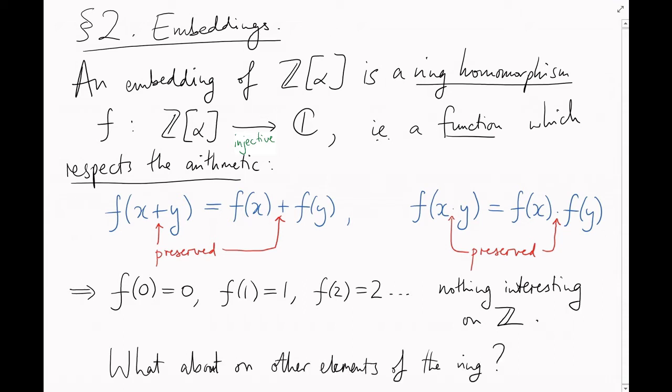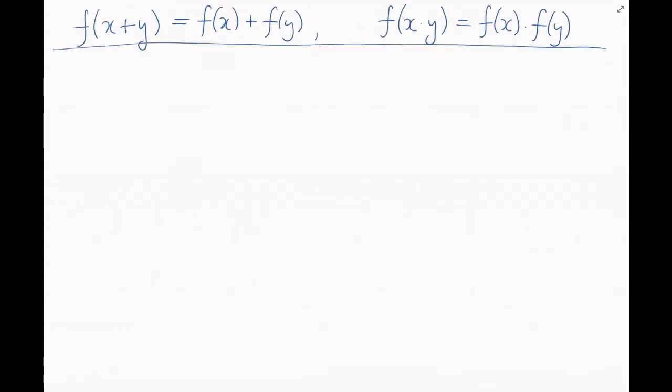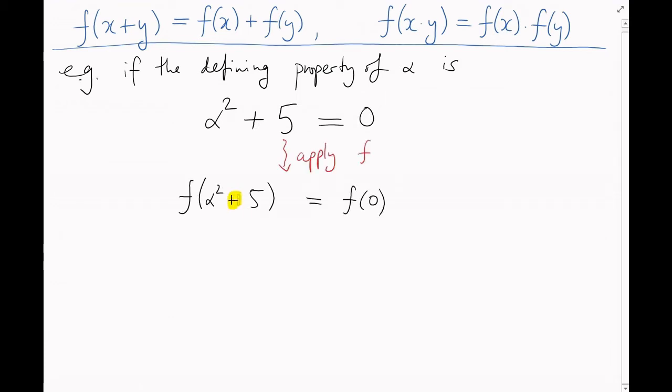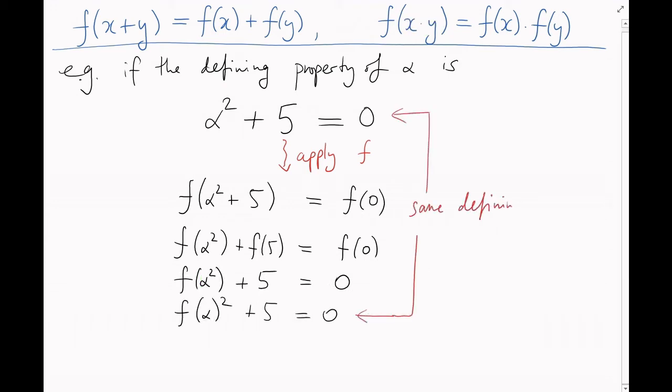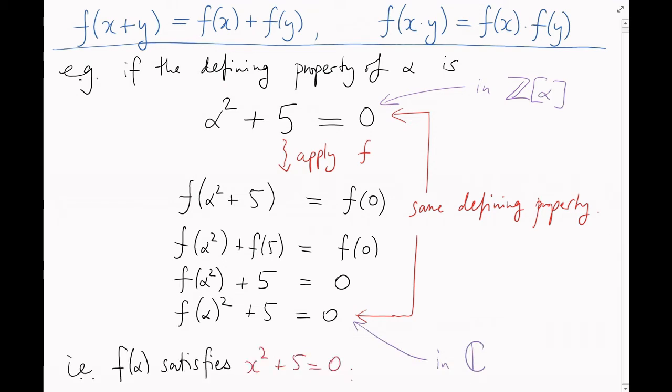What about the other elements of this ring? Well, the element alpha has some sort of defining polynomial equation over the integers. For example, if the defining property of alpha was that it satisfied the equation alpha squared plus 5 equals 0, then by applying f to this equation, you would see that f of alpha must also have the same defining property inside the complex numbers. In other words, f of alpha is a root of the equation x squared plus 5 equals 0.